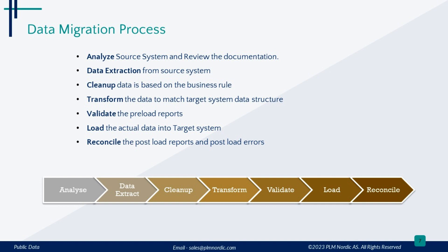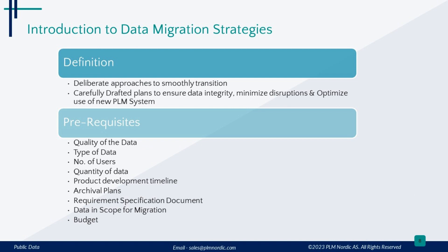Now that we've glimpsed the stages, let's venture further into the details of data migration strategies. PLM data migration strategies refer to a set of deliberate approaches designed to smoothly transition data from one system to another within a product lifecycle management framework. These strategies are carefully crafted plans that ensure data integrity, minimize disruptions, and optimize the use of the new PLM system. In essence, these strategies act as the guiding principles that shape how we migrate data, defining the sequence, methodology, and timing to achieve a successful migration.